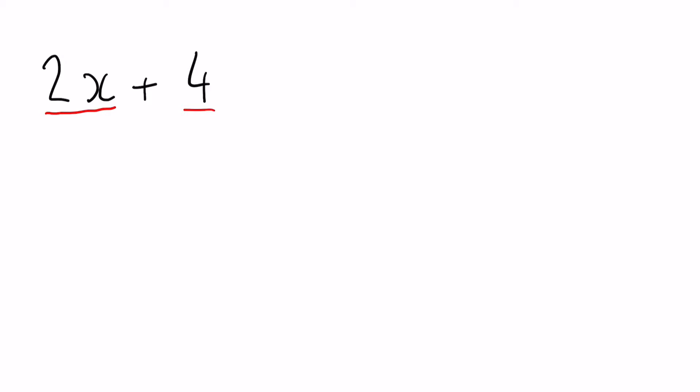If we take a look at the two numbers we've got here, we've got a 2 and we've got a 4. Both of those numbers can be divided by 2. So that's exactly what we're going to do. This is how you always want to set up your factorising questions. You put your 2 on the outside and then you think, if I divide this by 2, what am I left with?